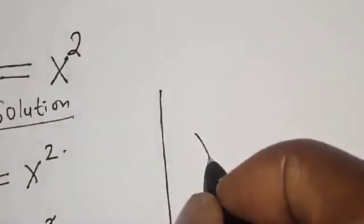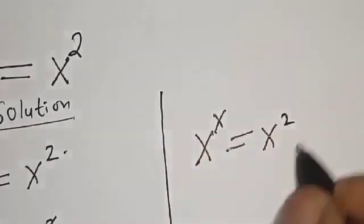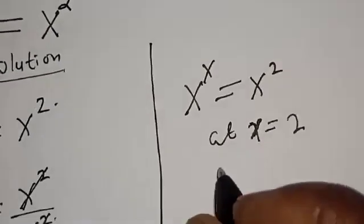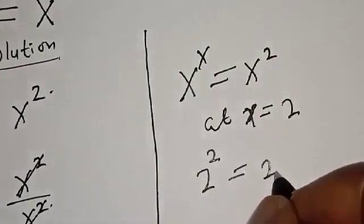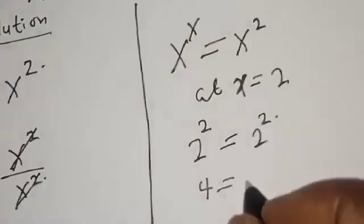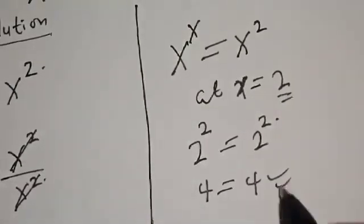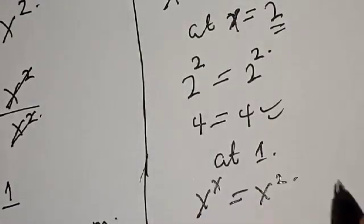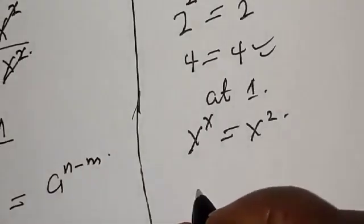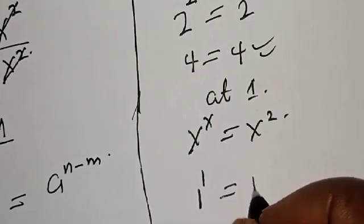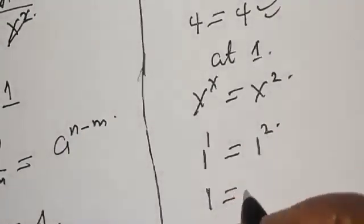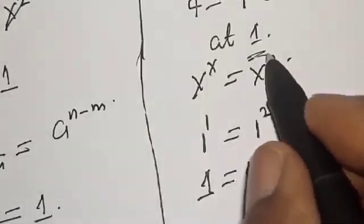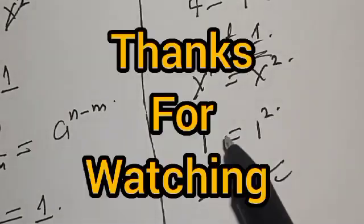We have the given equation s raised to the power s is equal to s squared. At s equal to 2, we have 2 raised to the power 2 is equal to 2 squared, and 2 squared is 4, which equals 4. We satisfy the equation. At s equal to 1, we have 1 raised to power 1 is equal to 1 squared, which gives 1 equals 1. The left hand side equals the right hand side, so we satisfy the equation at s equal to 1.